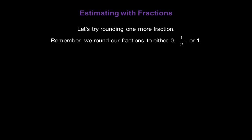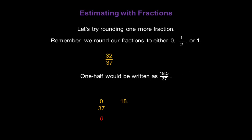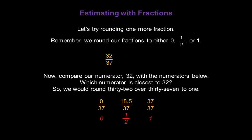Let's try rounding one more fraction. Remember, we're going to round to either 0, 1 half, or 1. Let's look at 32 over 37. For that fraction, 0 would be written as 0 over 37, 1 half would be written as 18 and a half over 37 (because 18 and a half is half of 37), and 1 would be written as 37 over 37. Comparing our numerator 32 with those reference numerators, the closest is 37. So we would round 32 over 37 to 1.